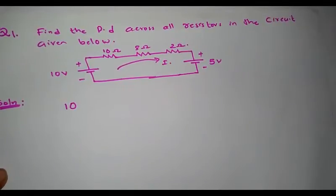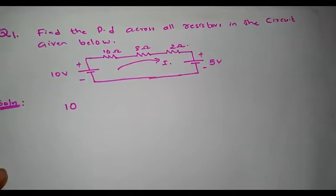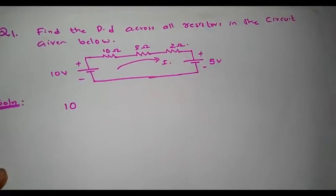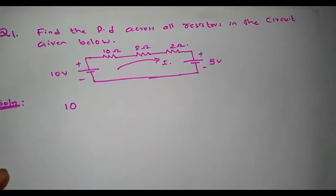Kirchhoff's voltage law states that in a closed mesh, the algebraic sum of potential drops and EMF in a closed circuit is equal to zero. So I write 10, and next, when I move in the clockwise direction, the next element I encounter is a 10 ohm resistance.